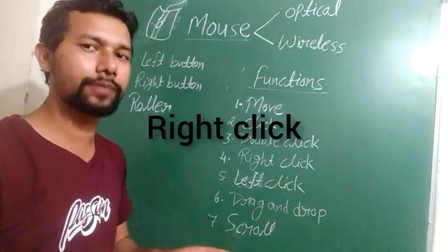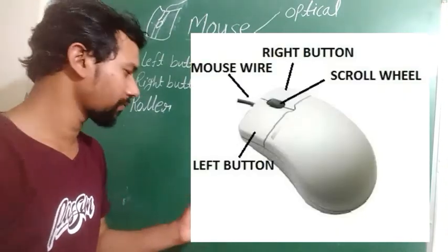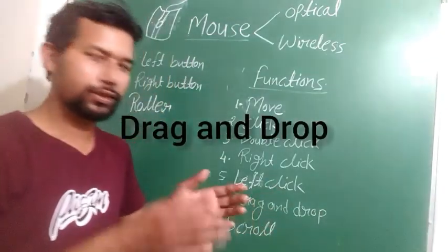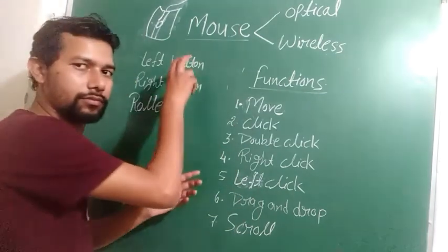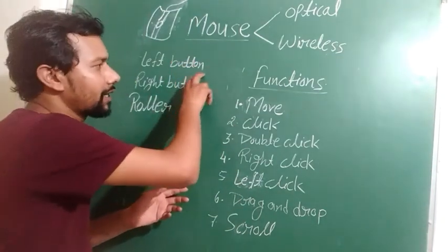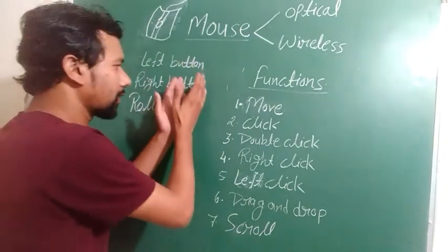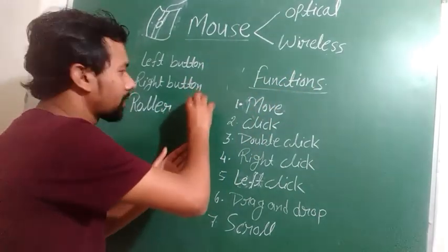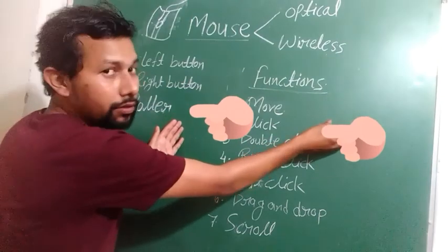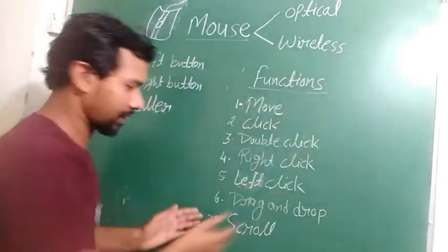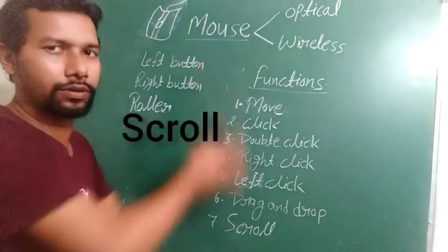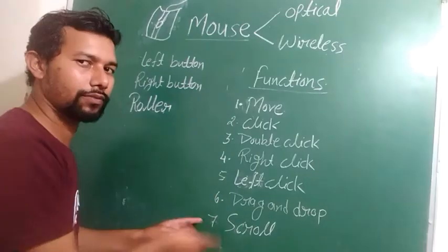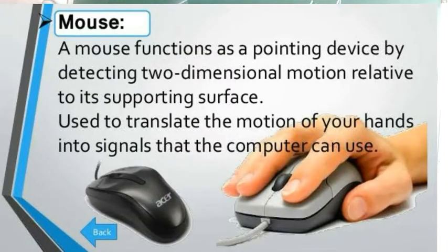Right click — when you click the right button, that is called right click; similarly, left click is with the left button. Drag and drop — you select an icon and drag it, meaning you move it from one place to another; dropping means you place it at the destination. Last is scroll — if your page is very long, you use the scroll function using the roller button to move up or down.